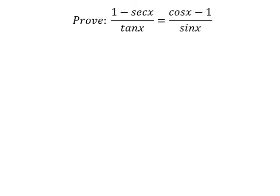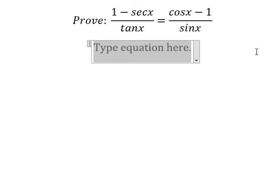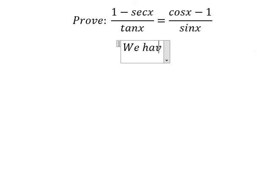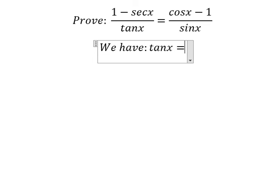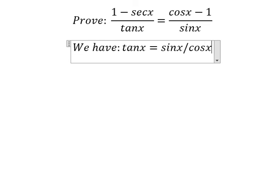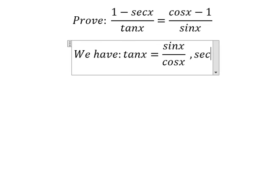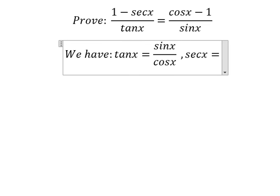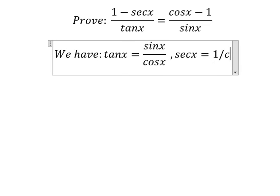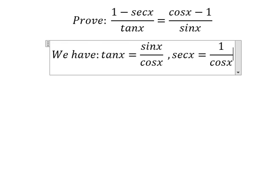We have the formulas here. Tan x equals to sine x over cosine x. And secant of x equals to 1 over cosine x.